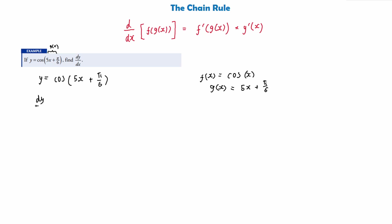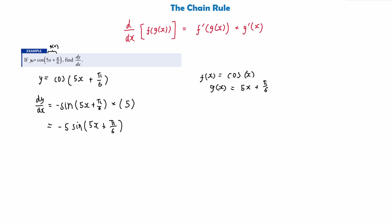Using the chain rule formula, we begin by finding the derivative of whatever is outside the brackets. The derivative of cos x is minus sine x, so we get minus sine of whatever is in the brackets: (5x + π/6). Then we multiply by g'(x), the derivative of 5x + π/6, which is just 5 — the π/6 disappears. So we can bring the 5 to the front to get minus 5 sine(5x + π/6), and this is our derivative.